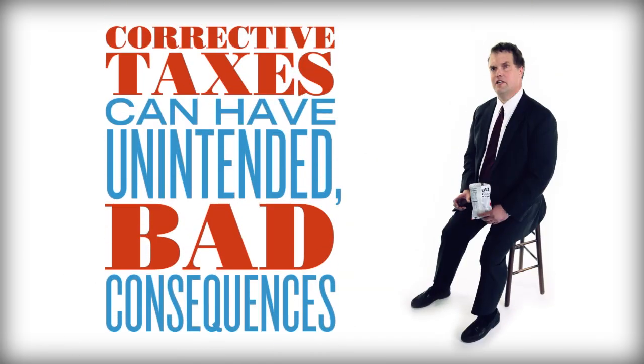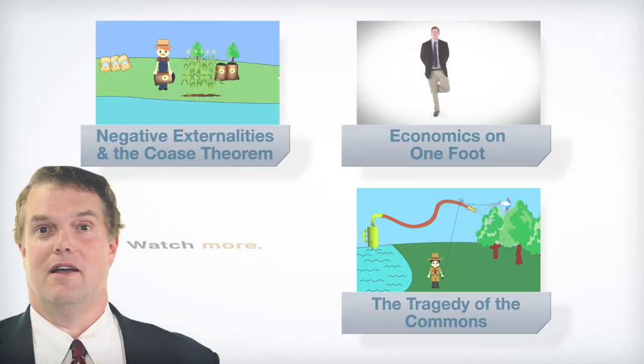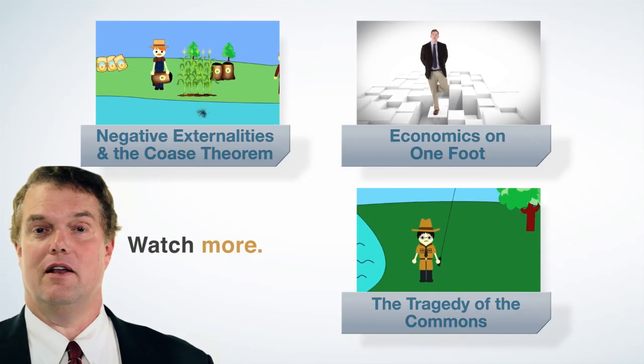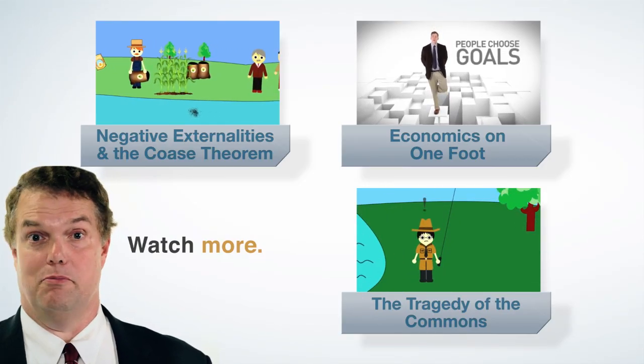The fix-it-with-taxes solution often has unintended bad consequences. The government has a knowledge problem just like everybody else. Every economics student learns about externalities and Pigouvian taxes. But professors rarely mention how hard Pigou himself thought it would be to get those taxes exactly right. Keep learning liberty. Click on one of our other videos to watch more.